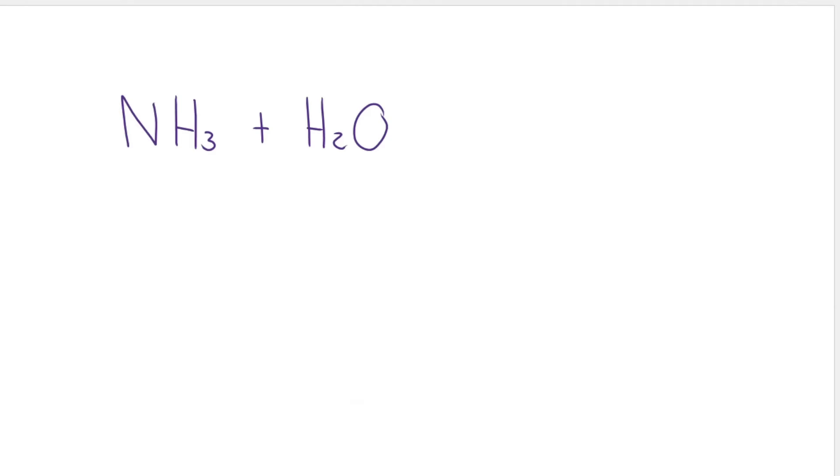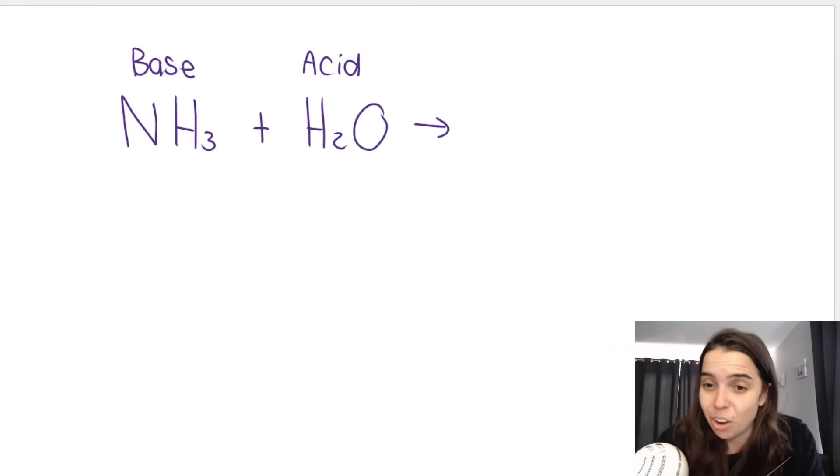I could ask you to complete this reaction for me. We've got ammonia, which we said is a weak base. And in this case, it's reacting with water. But water is now my acid. Now you might be thinking, earlier on water was a base, now it's an acid. What's going on? Water can act as an acid or a base, depending on what it's reacting with. Water is what we call an ampholyte, and I'll deal with that in another video.